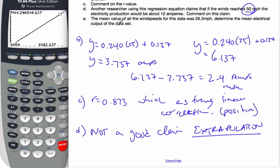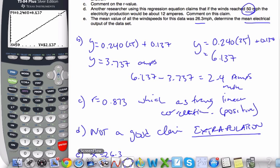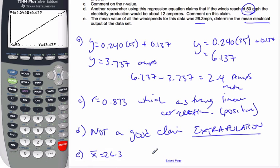Part E says the mean value of the wind speeds of the data is 26.3. Determine the mean electrical output of the data. That means x bar is 26.3. That's the mean of the x value. On every regression line, the point x bar, y bar is always on the line of regression.